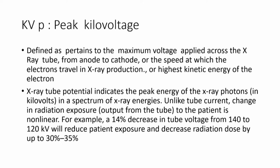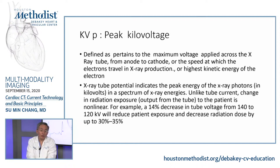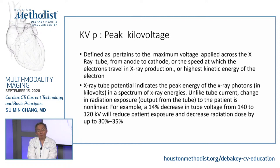The other big concept is peak kilovoltage, defined by the maximum voltage or energy applied to the photons coming out of the X-ray tube — essentially the highest possible kinetic energy of the photon electrons generated. Unlike tube current, the amount of radiation is not directly proportional to the energy but rather to the square root. So a 14% decrease in tube voltage from 140 to 120 kV reduces exposure by 30–35%. This is a very important concept for minimizing radiation dose to the patient.